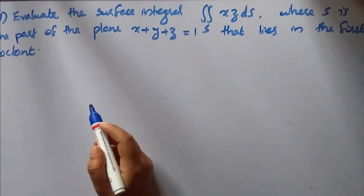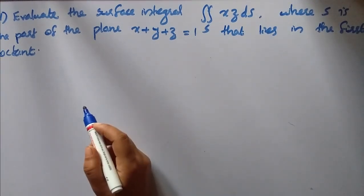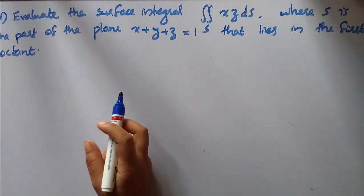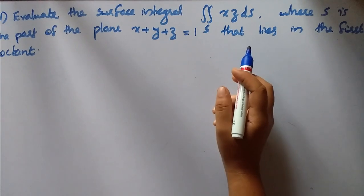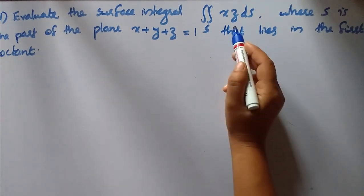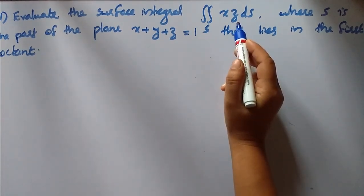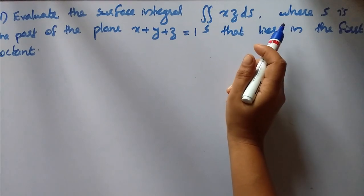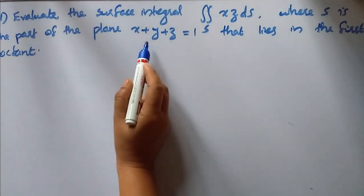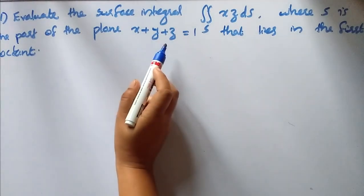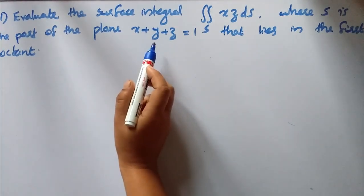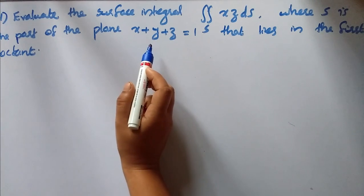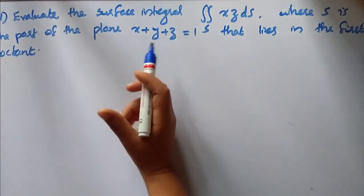We are using the surface integral of the function g of x, y, z equal to x·z. The surface is the plane x plus y plus z equal to 1, restricted to the first octant.